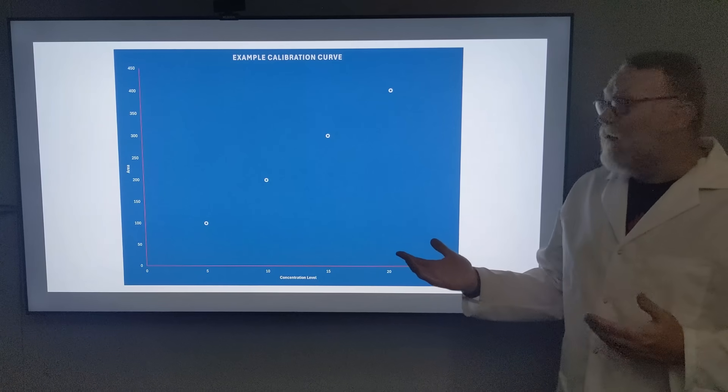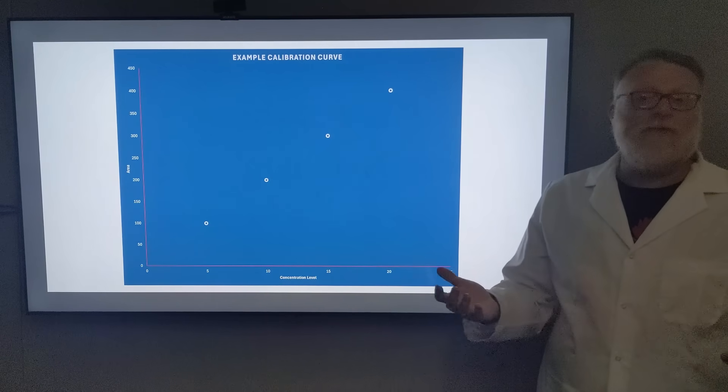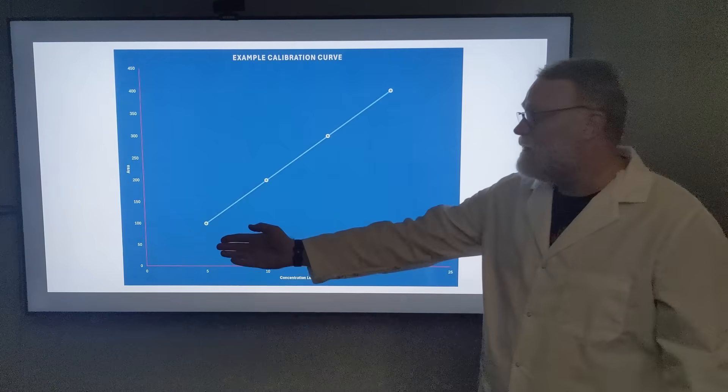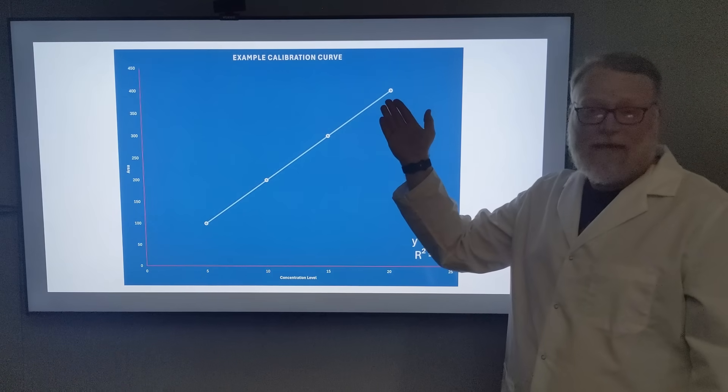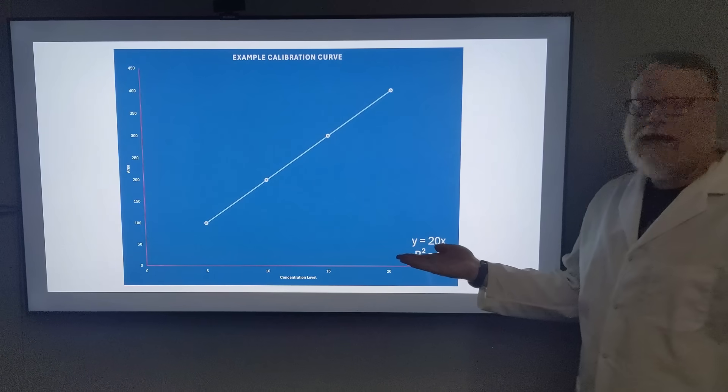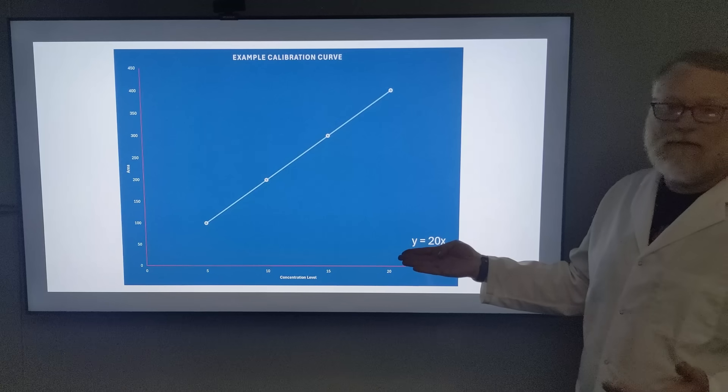What we need to do is go back to ninth or tenth grade math and do a linear regression. We're going to draw a line that goes through each of our points as best it can. It's going to give us two things: our equation y = mx + b. In this case, y = 20x + 0 because it's a perfect curve in a perfect world.